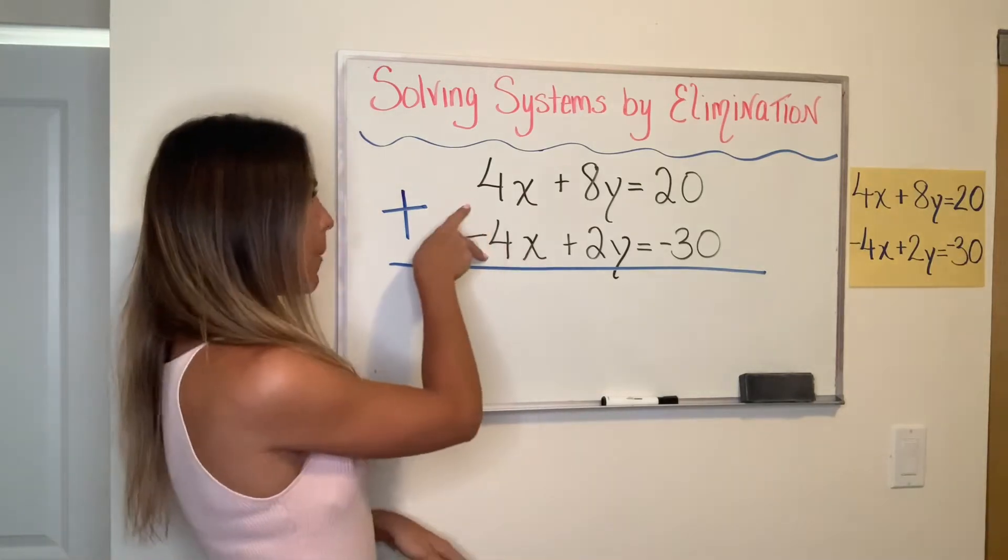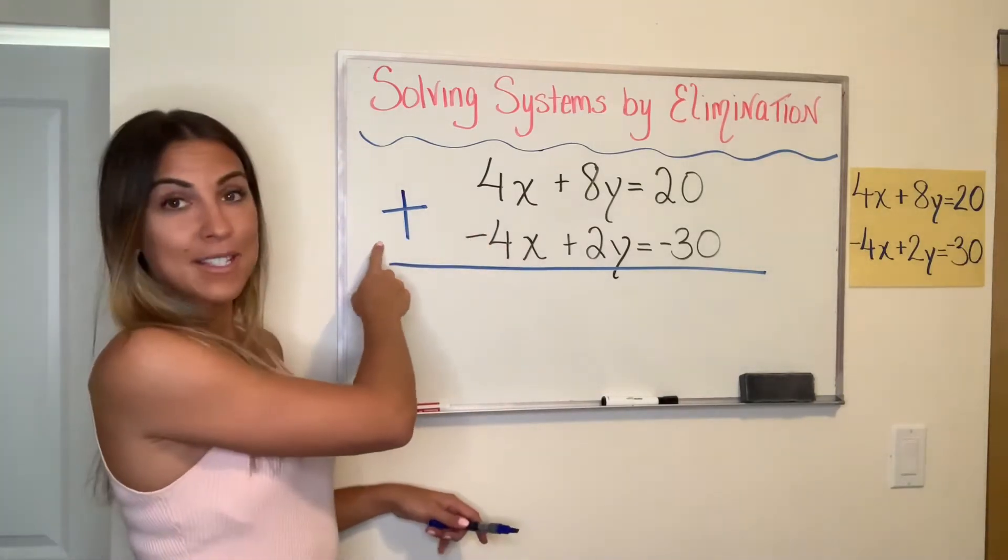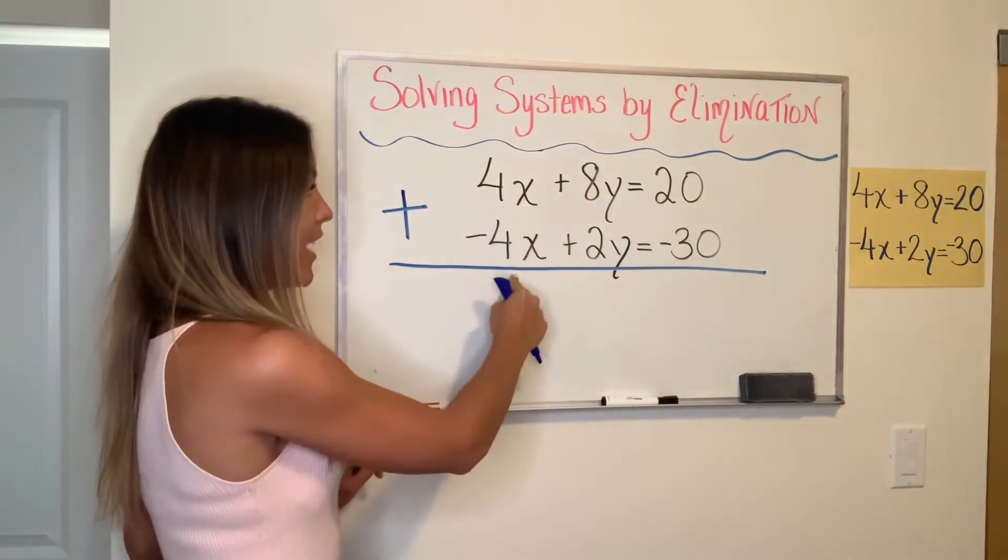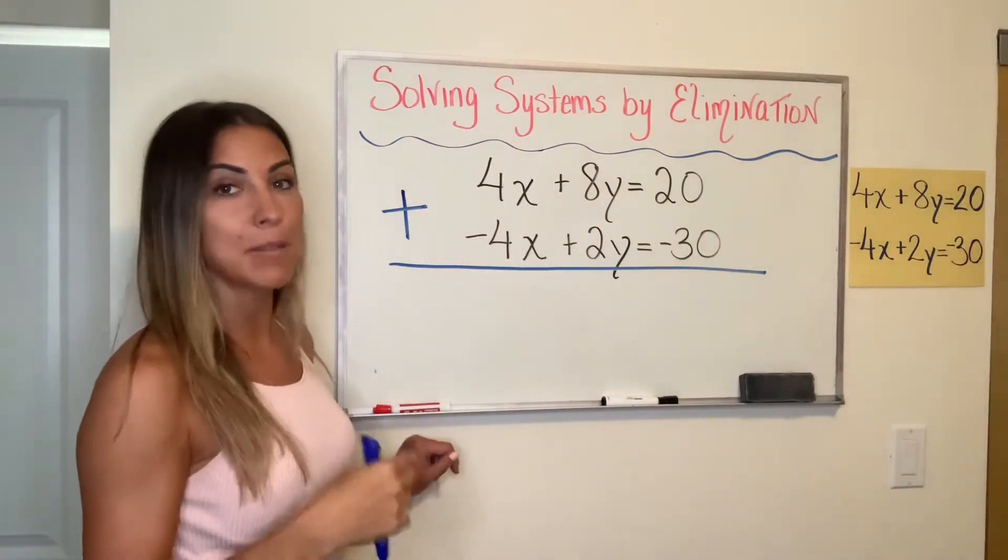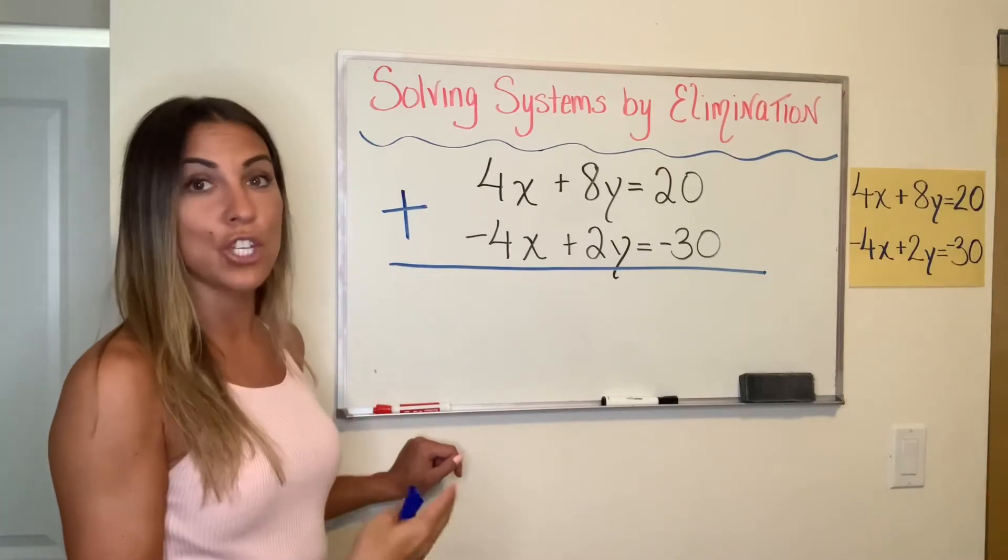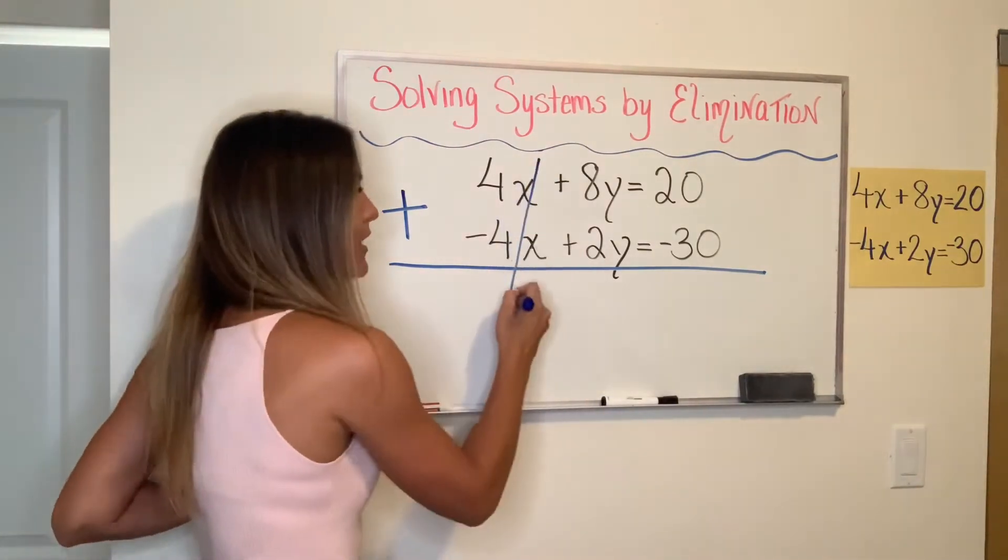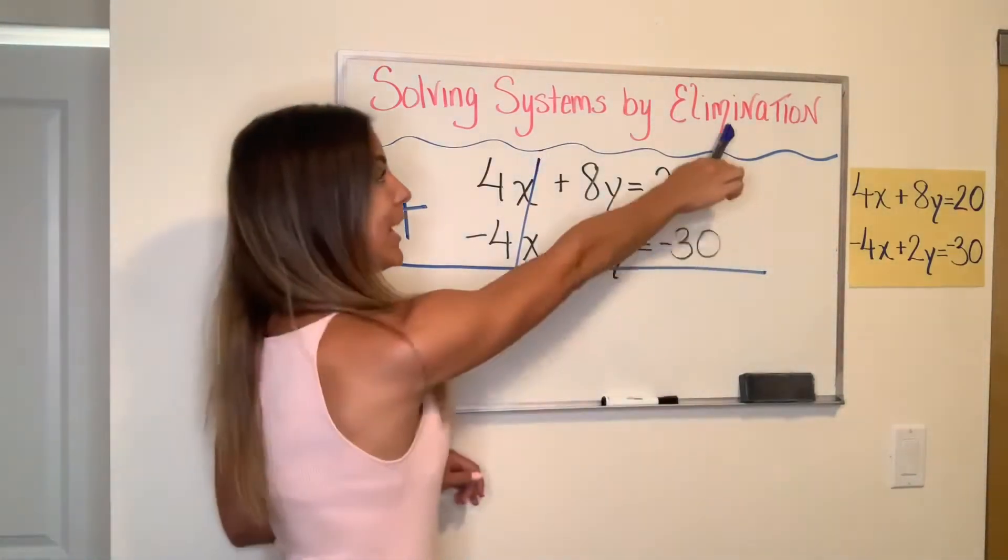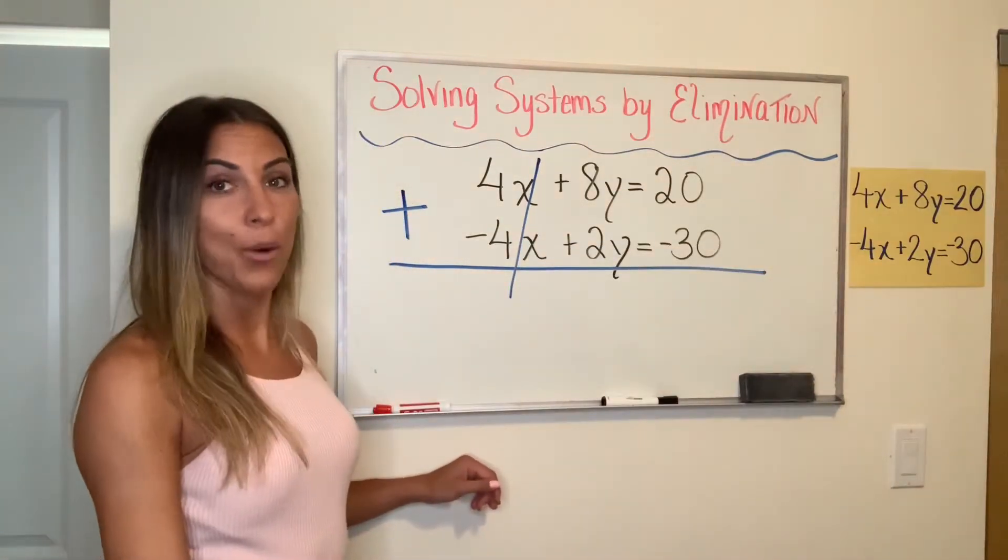So we see opposite coefficients. We're going to add these together. Because when I add 4X and negative 4X, I get zero X. But zero times any number is just zero. So these two guys cancel out. And I have eliminated one of my variables already that quickly.